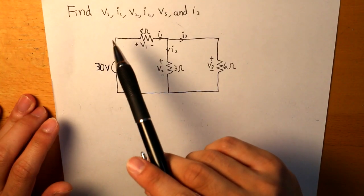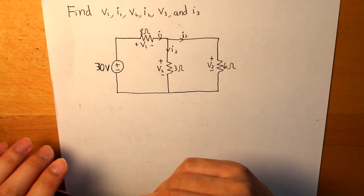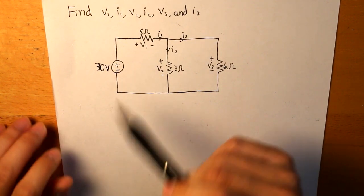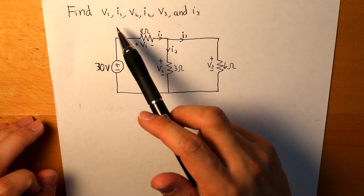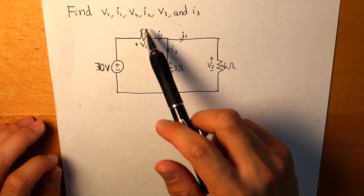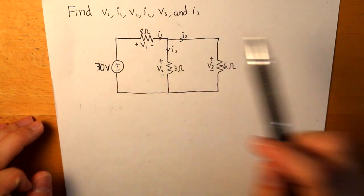So here we have a practical example on applying KCL and KVL. So this question asks us to find what V1, I1, V2, I2, V3, and I3 are.